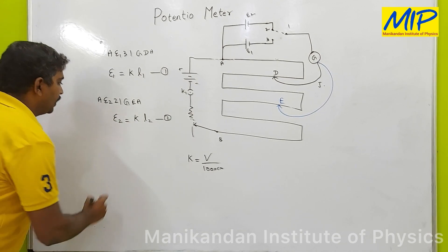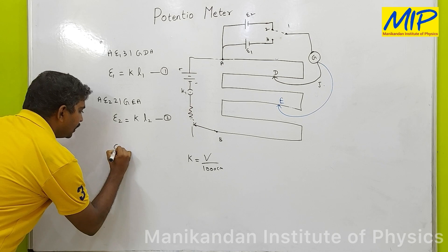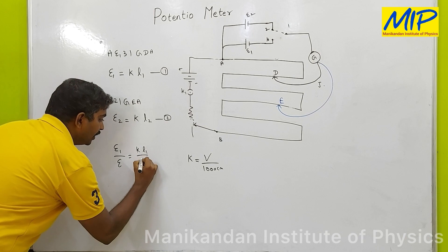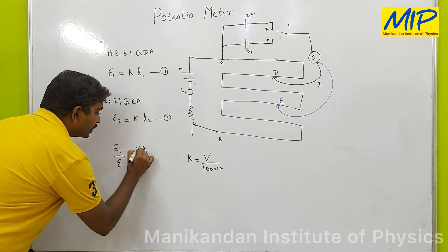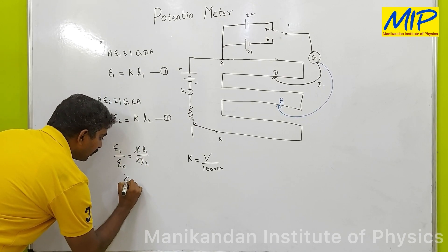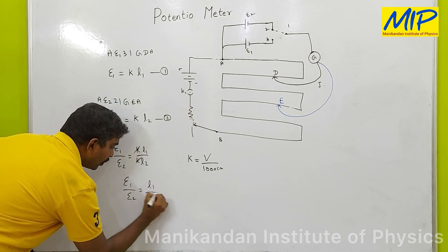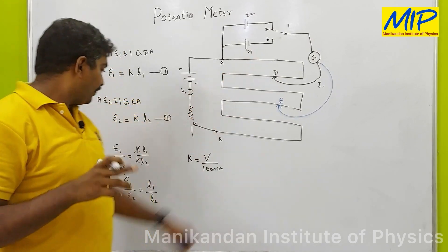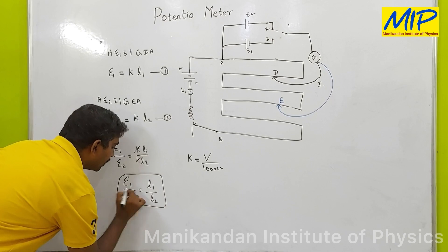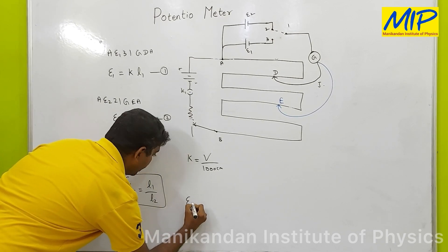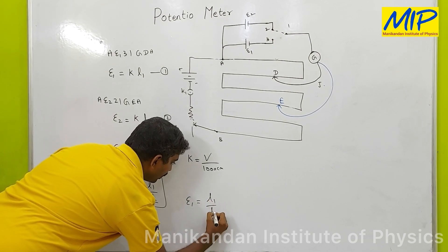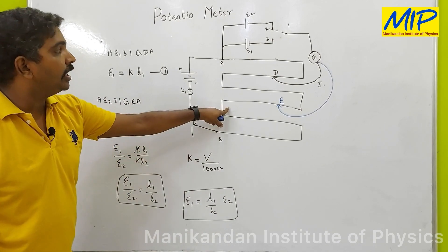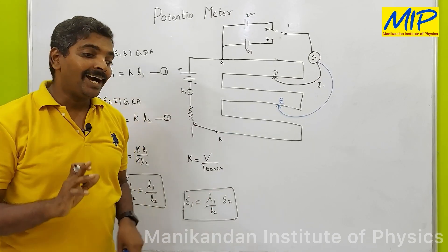I can write E1 by E2 equals K times L1 divided by K times L2. The K's cancel, giving: E1 / E2 = L1 / L2. If one of the EMF values is already known, I can find the unknown EMF from this experiment as E1 = (L1 / L2) × E2. Using this potentiometer, we are able to find the EMF of an unknown cell.